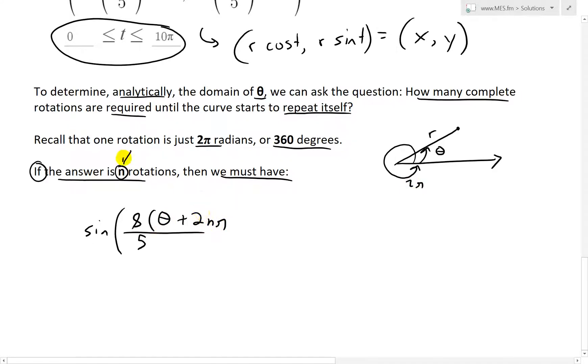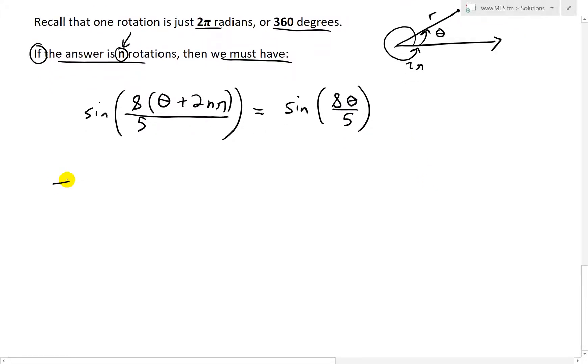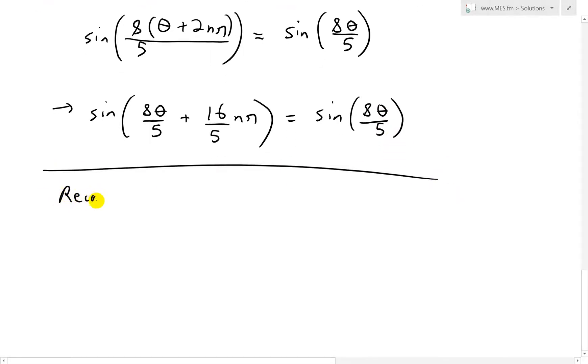So we're going to add a number of rotations. So 2nπ, because one rotation is 2π, so we have θ plus n rotations, like that. And then we put this bracket over top. And then this has to equal back to the same formula, which is going to be just sin(8θ/5). So basically, what we're trying to find out is if it has n rotations, and then you just rotate about those, then it just starts looping back around the same curve. So if we simplify this part, we get sin(8θ/5 + 16nπ/5). And this just equals to sin(8θ/5) like that.